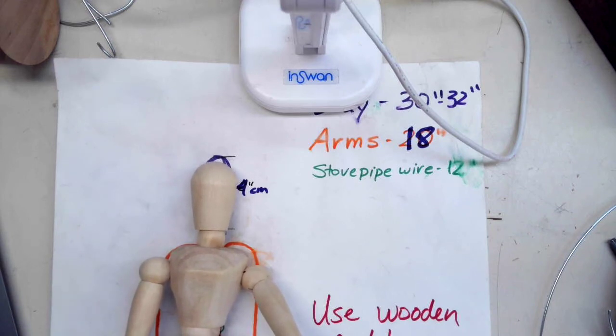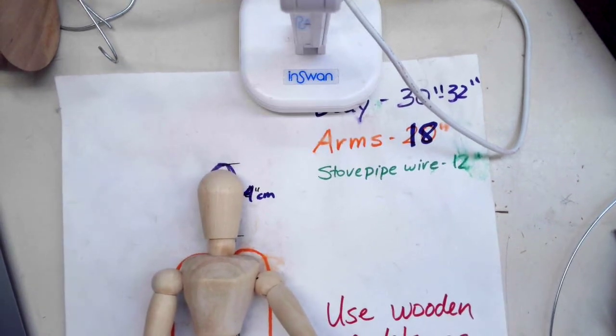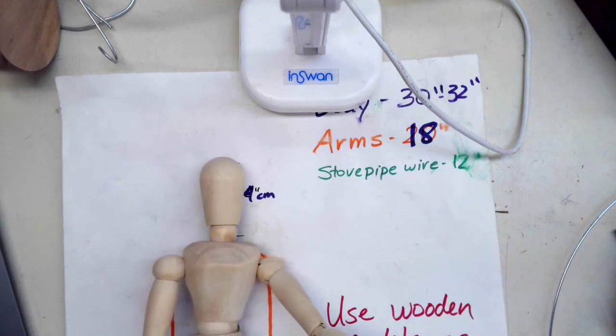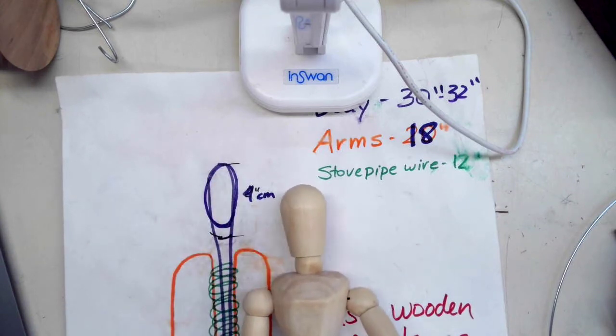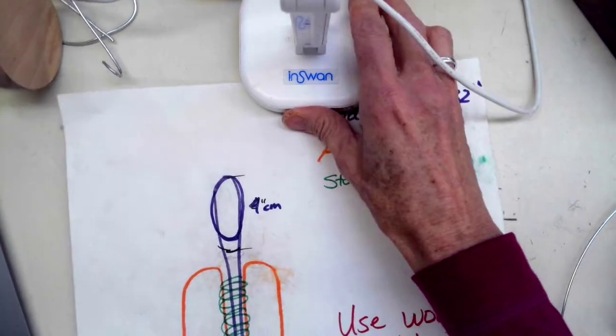So you may want to make it a little bit taller, but keep in mind your athlete. Like if you are doing a tiny little athlete you could make it smaller than this, and if you know your athlete's really tall you could make it a little bit bigger than this. But this is a basic guide and you're going to first cut about 30 inches for the body.